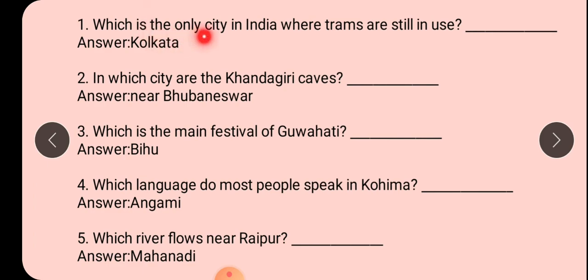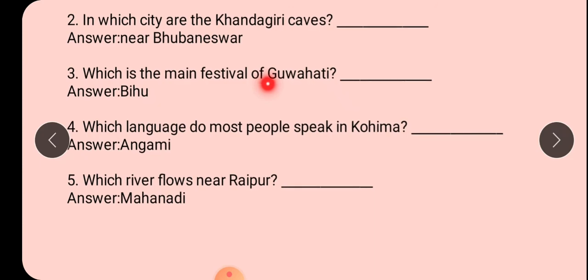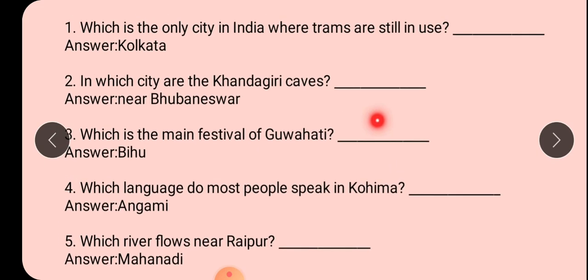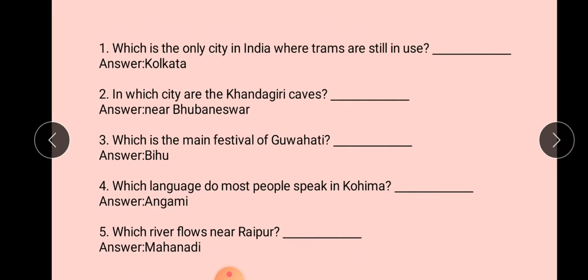Which is the only city in India where the trams are still in use? Kolkata. In which city are the Khandagiri caves? Bhuvaneshwar. Which is the main festival of Guhati? Bihu. Which language do most people speak in Kohima? Angami. Which river flows near Aipur? Mahanadi. Complete answer in one word, Set A and Set B, in your notebook. The session ends. Thank you children.